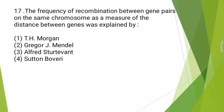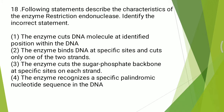Seventeenth question: the frequency of recombination between gene pairs on the same chromosome as a measure of the distance between genes was explained by whom? Options: T.H. Morgan, Gregor J. Mendel, Alfred Sturtevant, or Sutton & Boveri? The correct answer is the third option — Alfred Sturtevant.